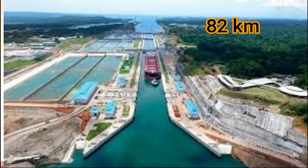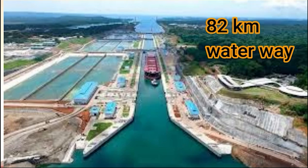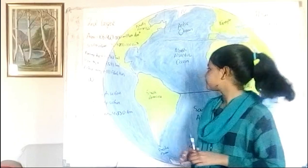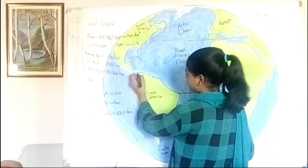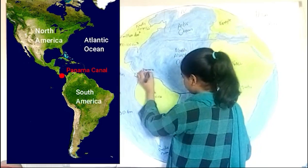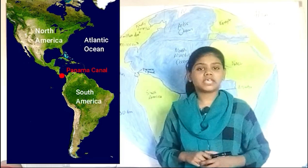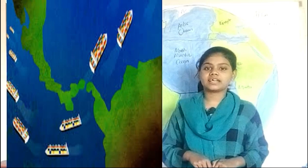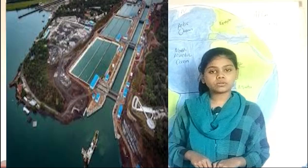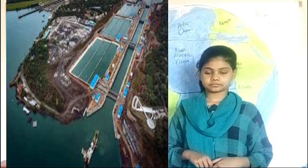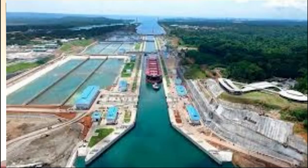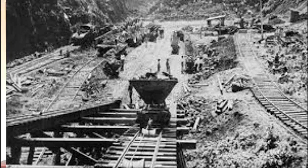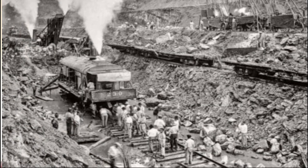The Panama Canal is an artificial 82-kilometer waterway that connects the Atlantic Ocean with the Pacific Ocean and divides North and South America. On average, it takes a ship 8 to 10 hours to pass through the canal. Between 1,300 to 1,400 ships use the canal every year. $2 billion in tolls are collected annually. It is over 100 years old. 35,000 people died building the Panama Canal, and more than 60 million pounds of dynamite were used to construct it.